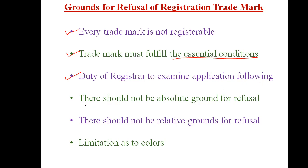There should not be an absolute ground for refusal — if there is, the registrar shall not register. There should not be a relative ground for refusal. And if the trademark is subject to limitations of color, then that trademark also cannot be registered. These are the grounds for refusal of registration of a trademark, which we will see in detail.